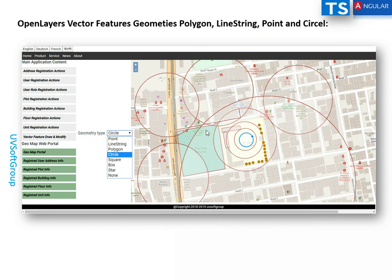You can see the polygon geometry, the point geometry, and the circle geometry. This implementation works properly and I will continue the implementations with this one.